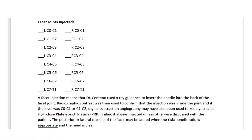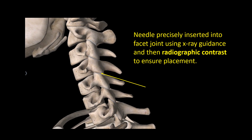We'll start with the facet joints that were injected. Facet joint injection is the injection of the small joints in the neck. These are about the size of your finger joints, and there are two at each level. The needle is precisely inserted into the facet joint or the back of the facet joint using x-ray guidance, and then radiographic contrast to ensure placement.